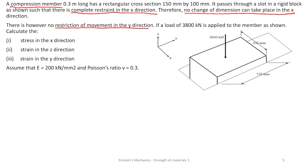A load of 3,800 kN is applied to the member. We are to calculate the stress in the x direction, the strain in the y direction, and the strain in the z direction. The Young's modulus E is 200 kN per millimeter square and Poisson's ratio V is 0.3.